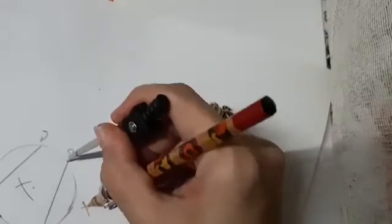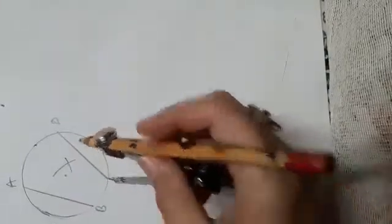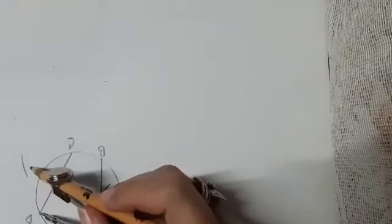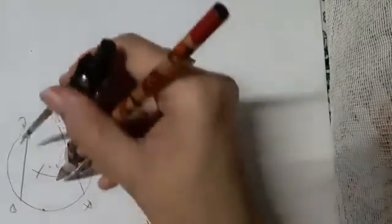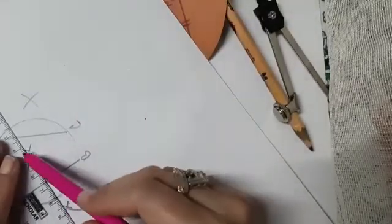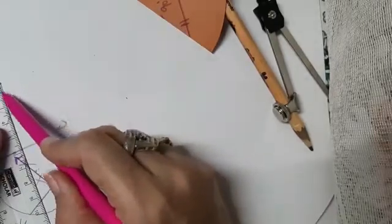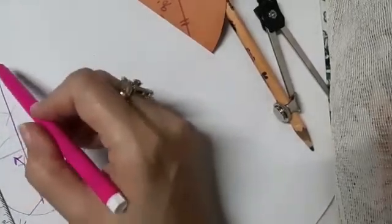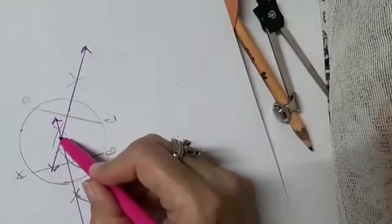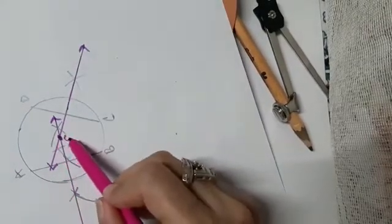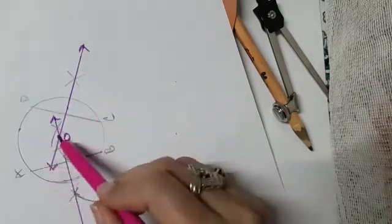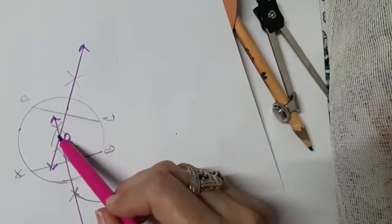Now with C as center and radius more than half of CD, draw arcs on both sides; similarly with D as center, intersect the previously drawn arcs. Drawing the perpendicular bisectors of AB and CD, notice carefully — the point of intersection is exactly where the needle was placed to draw the circle. That is the center.